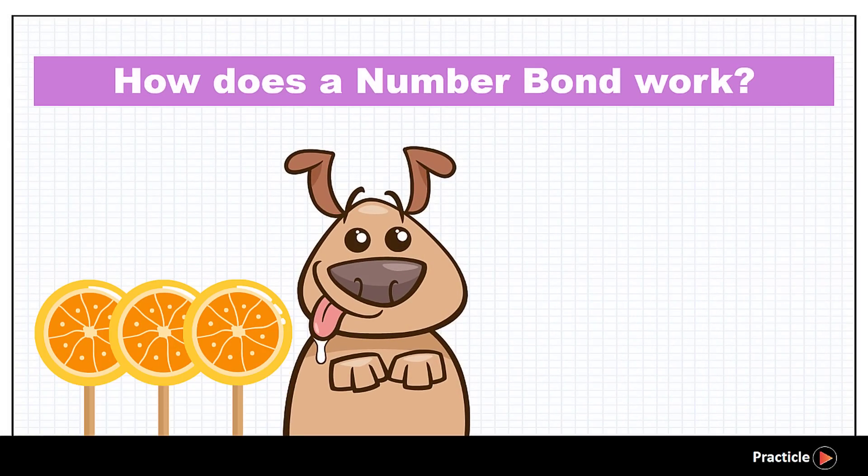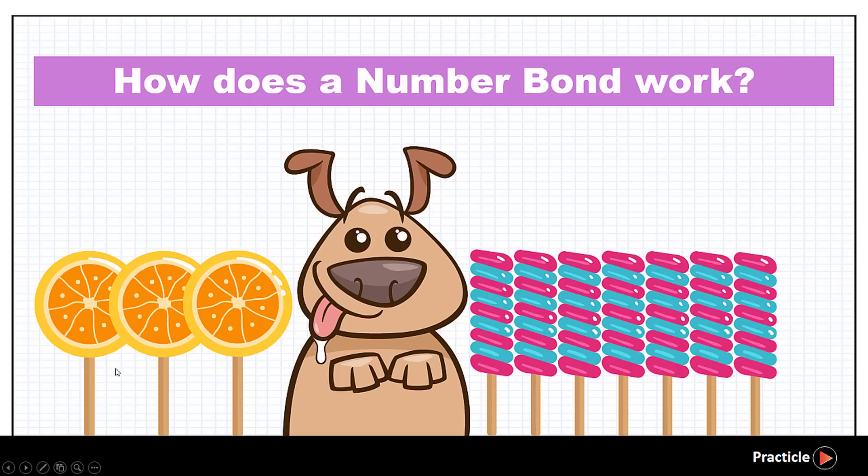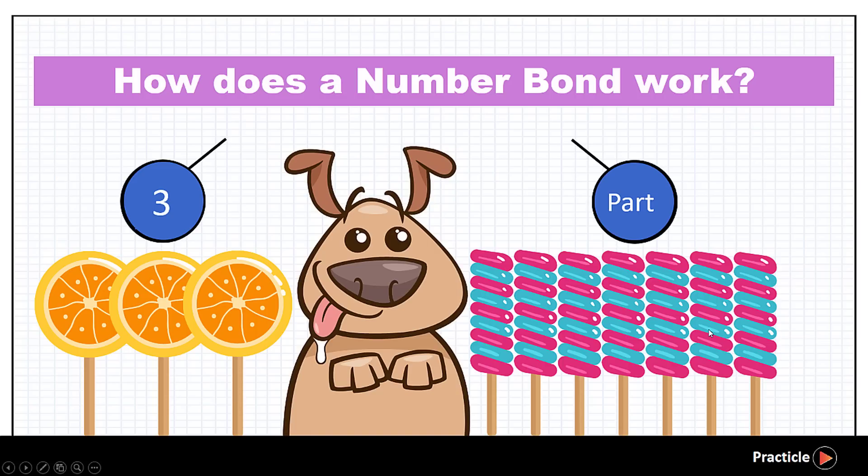So say we have 3 pieces of candies and 7 pieces of candies. These 3 pieces of candies that we have is part of everything that we have. Correct? So let's write the number 3 in one of these parts. Then what about the other 7 pieces of candies? The other 7 pieces of candies are also a part of everything that we have. And can you guess what we are going to do? If you said write the number 7 in this other part here, you are totally right.